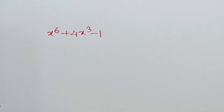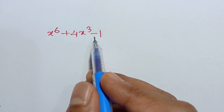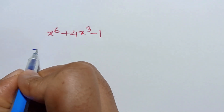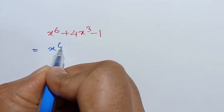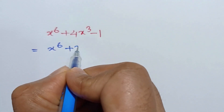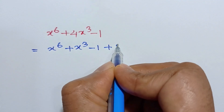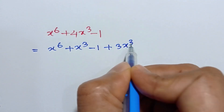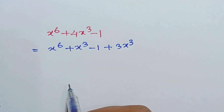Hi everyone. In this video I am going to show how to find the factors of this polynomial: x to the power 6 plus 4x cubed minus 1. This is equal to x to the power 6 plus x cubed minus 1 plus 3x cubed, since x cubed plus 3x cubed equals 4x cubed.